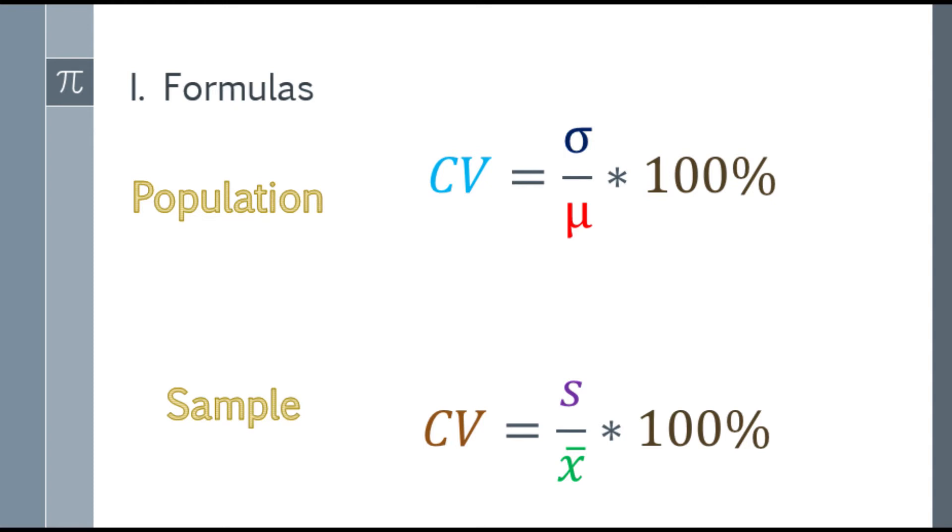So it's actually easy. It's either population or standard deviation, but we use almost the same formula. For population, you have CV, or coefficient of variation, is equal to the standard deviation of population over the population mean, and multiply it by 100%.